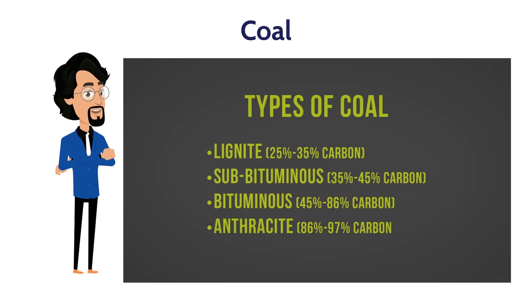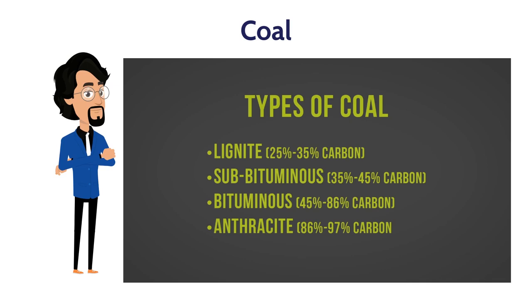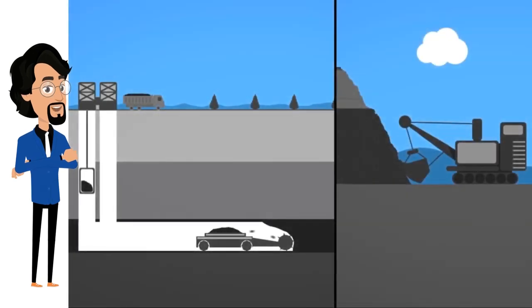The third type is sub-bituminous coal, which is black in color. The fourth and last type is lignite, also known as brown coal; it has the least concentration of carbon.